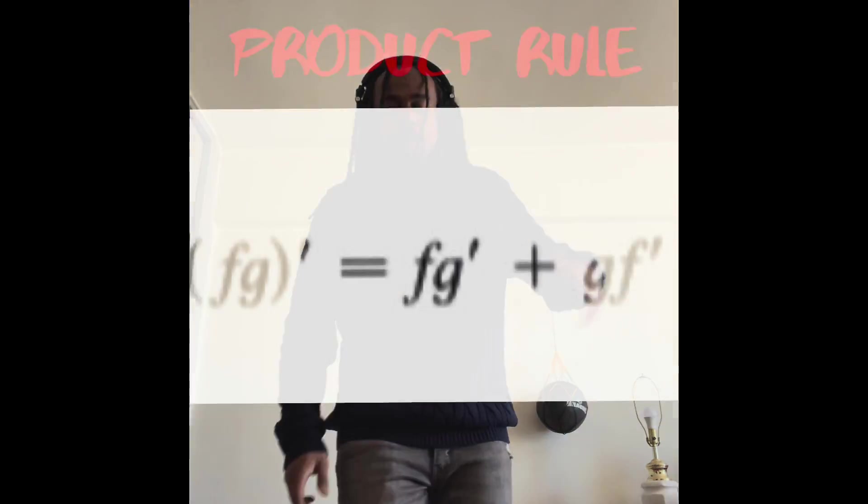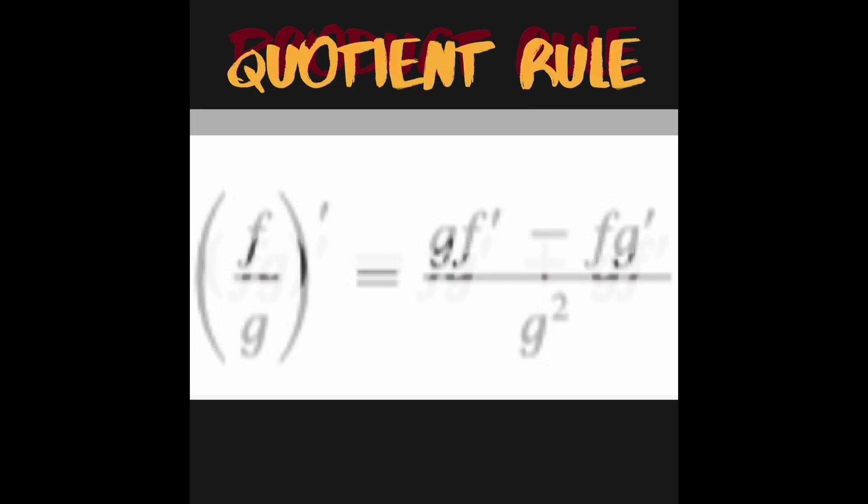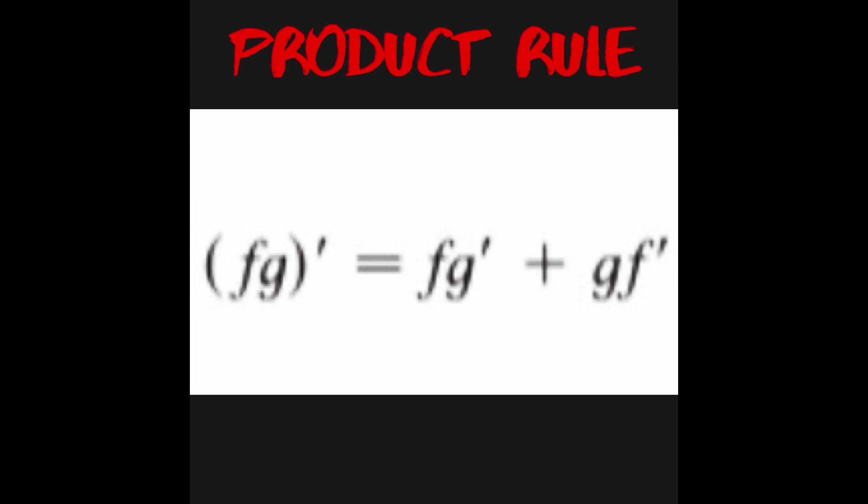Tricky derivative formulas 101. A derivative is simply the rate of change of a quantity. The product rule and then the quotient rule too. F of x times derivative of g of x, sum with g times derivative of f. Again, f of x times derivative of g of x, sum with g times derivative of f.